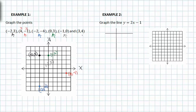Lastly, we have (3, 4) as the coordinate point. Starting at the origin, we're going to head to the right three spaces and then up four.